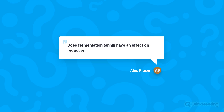Alec Fraser asks whether fermentation tannin helps with reduction. We've heard winemakers report that it can, but it depends on the severity and type of reduction. For H2S, fermentation tannin does not help — during fermentation, the best treatment for eggy H2S aromas is lots of oxygen to blow it off. Tannins do help with mercaptans, though. Post-fermentation, consider tannins or copper sulfate depending on what kind of reduction you're dealing with.